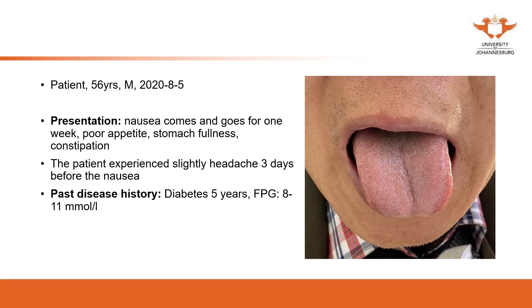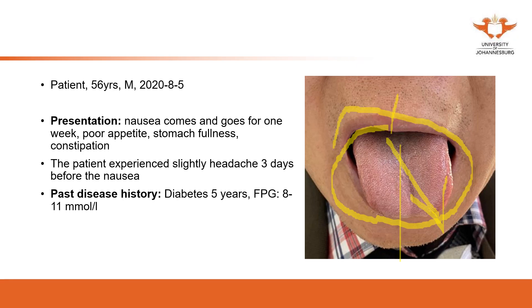However, during the consultation, after the inquiry — discussing symptoms and medical histories — when it came to observation, I observed the tongue and realized his tongue deviated to one side; it was not in the center. When we see this kind of tongue, the first thing that should come to mind is that this patient may suffer from a stroke. However, this patient didn't present any typical symptoms of stroke, such as hemiplegia or speech disorder.